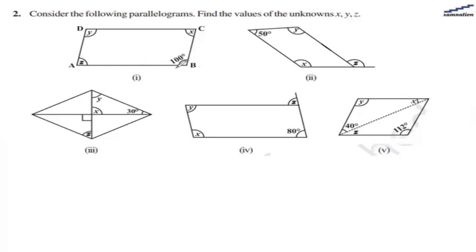One angle is given as 100. The opposite angle is equal, so that is equal to 100. And this x plus 100 will be 180 degrees, so that means x will be 80 degrees.